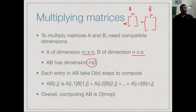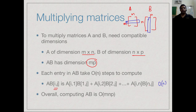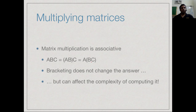To compute the product AB, the (i,j)-th entry is obtained by taking the i-th row of A and multiplying it with the j-th column of B: A[i,1]·B[1,j] + A[i,2]·B[2,j] + … + A[i,n]·B[n,j]. This takes O(n) steps per entry, and since there are m×p entries, the total cost of multiplying two matrices is O(m·n·p). This is the basic fact we need.